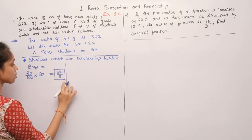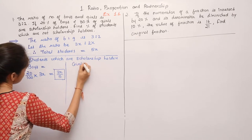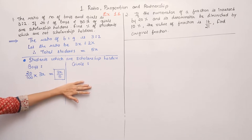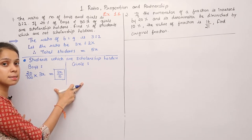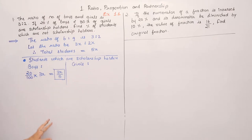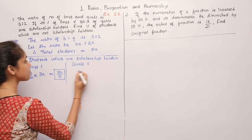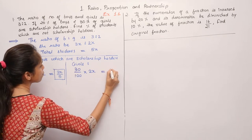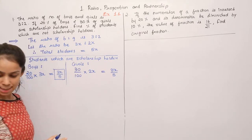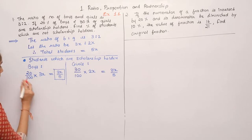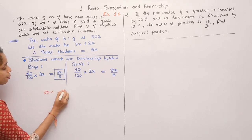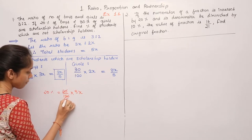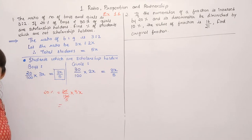Next, girls who are scholarship holders. We solve both the same way to show the method is identical. 30% of girls: 30 upon 100 into 2x equals 3x upon 5. For rough calculation: 20% is 20 by 100 into 3x, giving 3x upon 5 as the final answer.